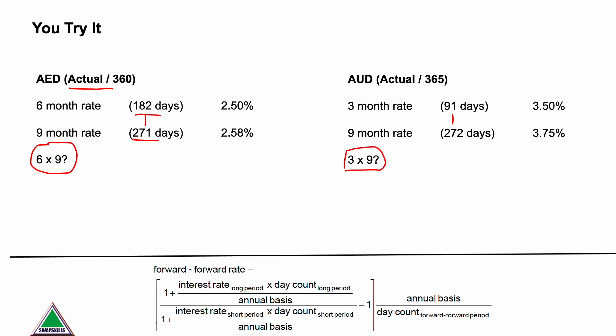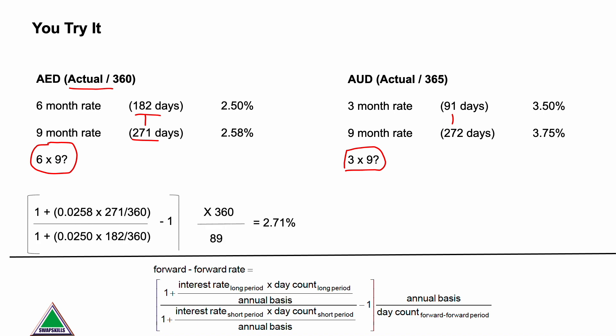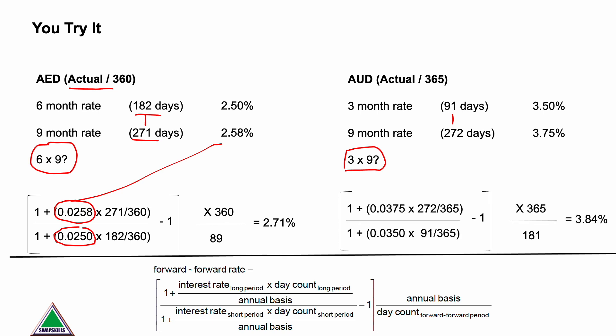Put me on pause now before I show you the answers. For the dirham sixes-nines, we had the long interest rate of 2.58% on top and the shorter maturity rate of 2.50% on the bottom, giving us 2.71%. For the Aussie dollar threes-nines, we get 3.84%. Does that number look right? If the three-month rate is 3.50% and the nine-month rate is 3.75%, intuitively on a positive yield curve the forward rate should be higher than the spot rate, so 3.84% feels correct. Always do a reality check — if you got 1% or 5%, those would be highly unlikely.